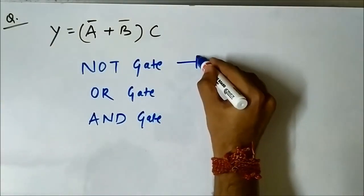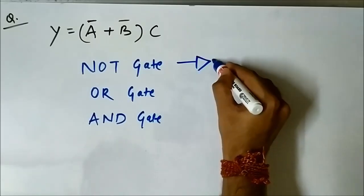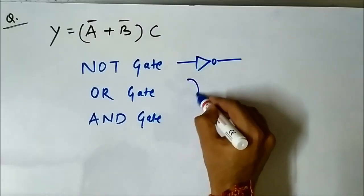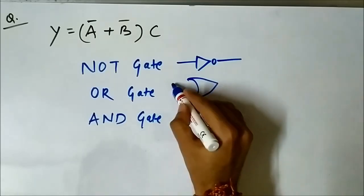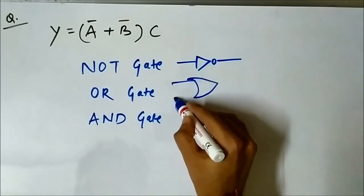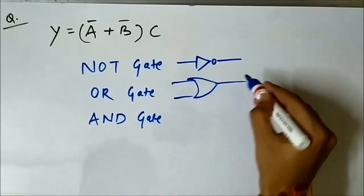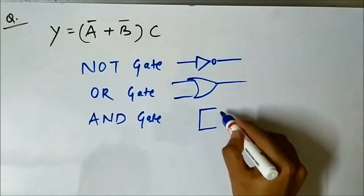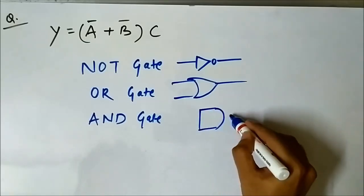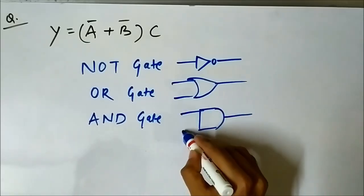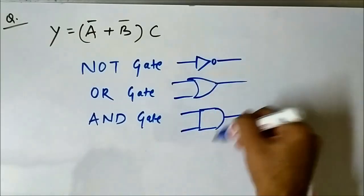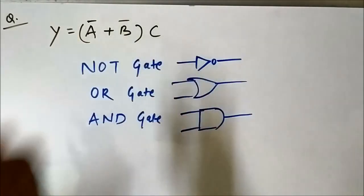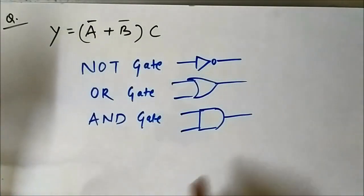The NOT gate looks something like this, the OR gate looks something like this, and the AND gate looks something like this. We will use the combination of these three gates to give us this logic output.